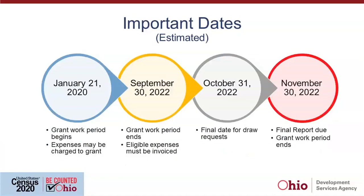The dates listed here are estimated dates. The thought is that folks will be able to reimburse for costs related to COVID-19 back to January 21st — that's the date listed in the HOPA guidelines, and we expect it to be the same for ESG. But all these dates are estimated because we don't have the information from HUD yet. Once they provide it, these dates may change. Right now we're planning on the grant running through September 30th of next year for the work completion date, which makes your drawing funds and report dates one month and two months later than that.